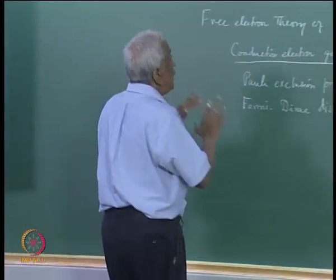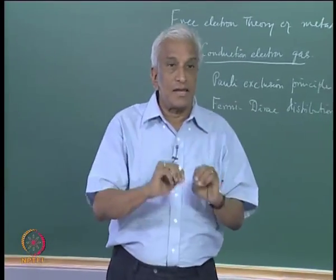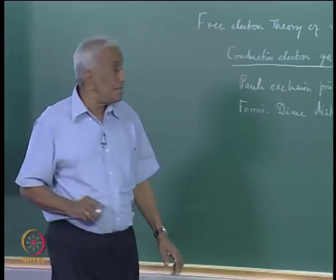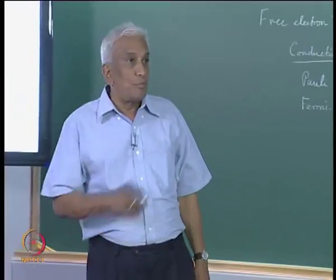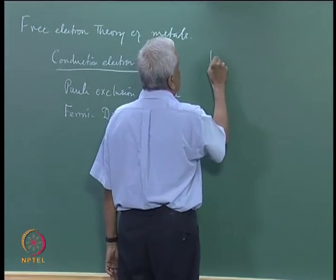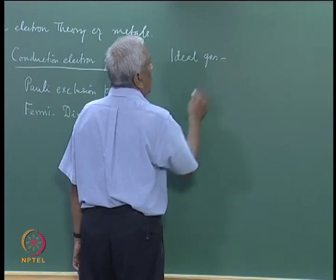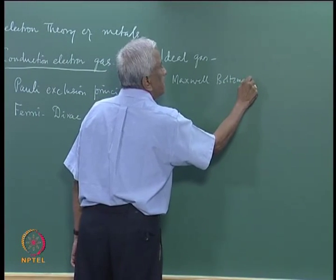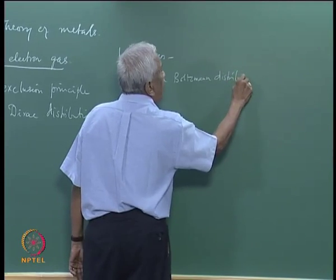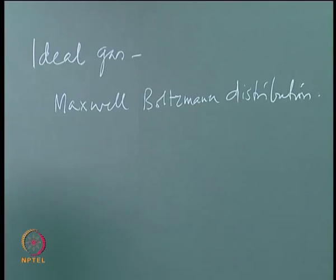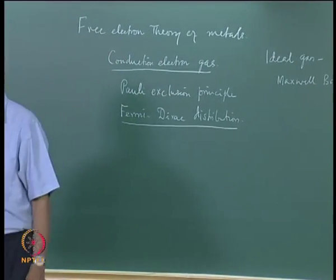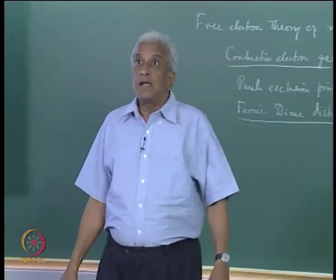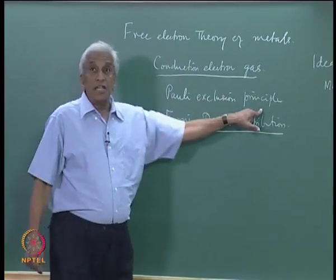The electrons are confined to the metal as a whole by the metallic bond, which binds the electron gas and prevents it from escaping. They are free to wander around inside the metal under the influence of applied electric or magnetic fields, or thermal gradients. This behavior of the electron gas is profoundly different from that of a classical ideal gas, because classical gas atoms or molecules satisfy the Maxwell-Boltzmann distribution.